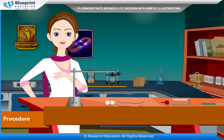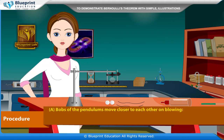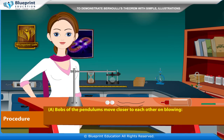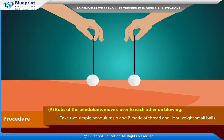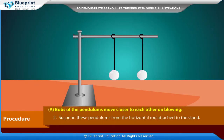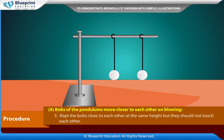There are two situations which can demonstrate this theorem. The first is: bobs of the pendulum move closer to each other on blowing. Take two simple pendulums A and B made of thread and lightweight small balls. Suspend these pendulums from the horizontal rod attached to the stand. Keep the bobs close to each other at the same height, but they should not touch each other.